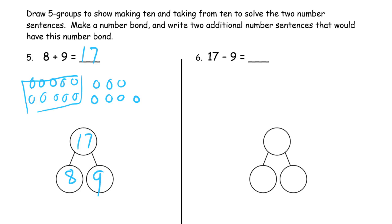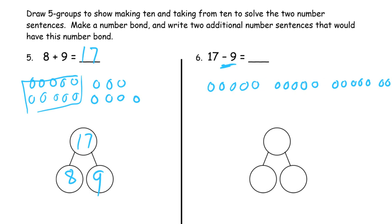Now we're going to subtract nine from that same 17. We draw 17 in five group rows and subtract nine — one left from the first two fives, and then we have seven and one more: eight. So 17 with parts of nine and eight.